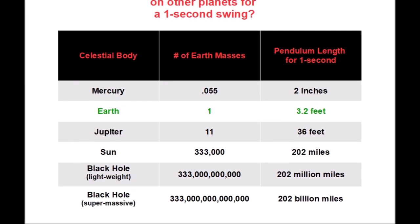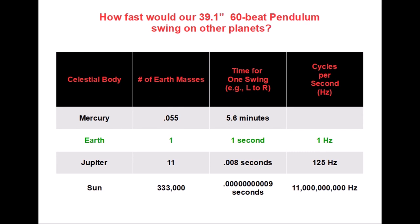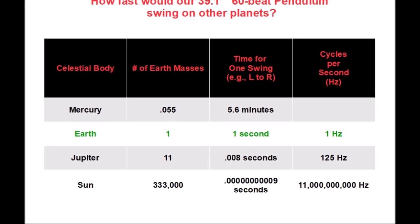our 39 inch pendulum on Earth would take one second, but on Jupiter, it would take 0.008 seconds to swing across. And on the Sun, it would oscillate at an amazing rate.